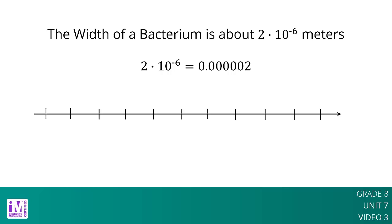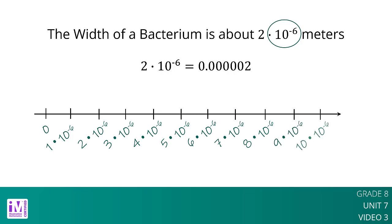We can see that 2 times 10 to the negative sixth power is a multiple of 10 to the negative sixth. So our number line will be labeled with multiples of 10 to the negative sixth. Note that the right side is labeled 10 times 10 to the negative sixth power, which can be written as 10 to the negative fifth power.